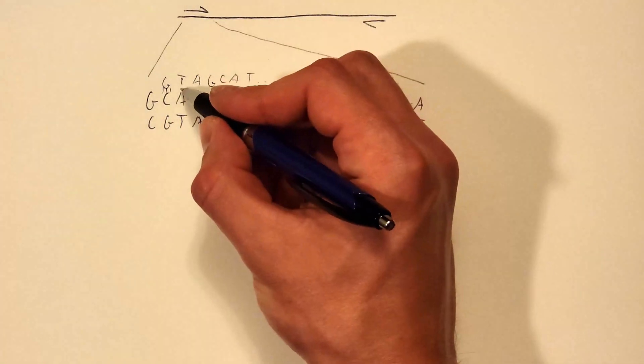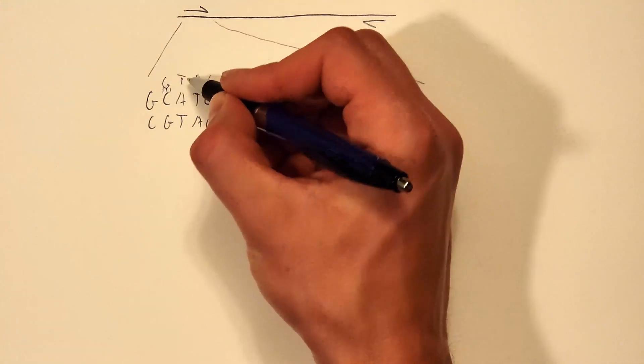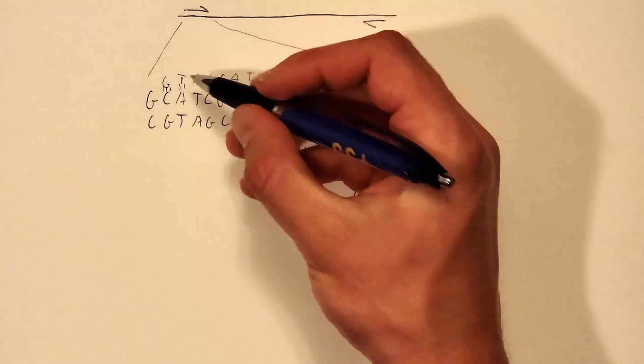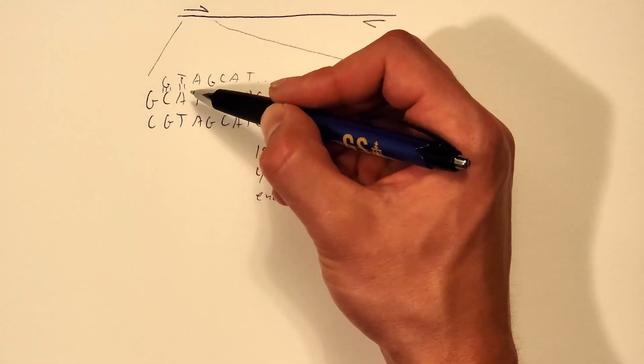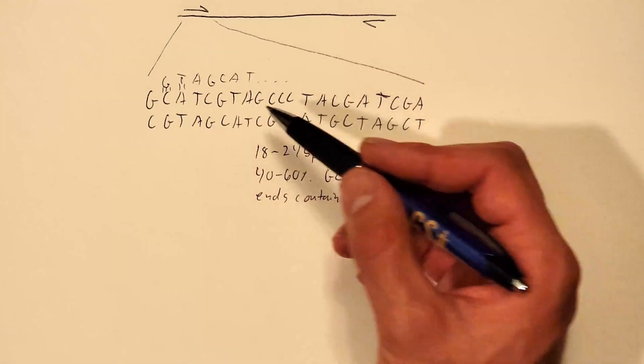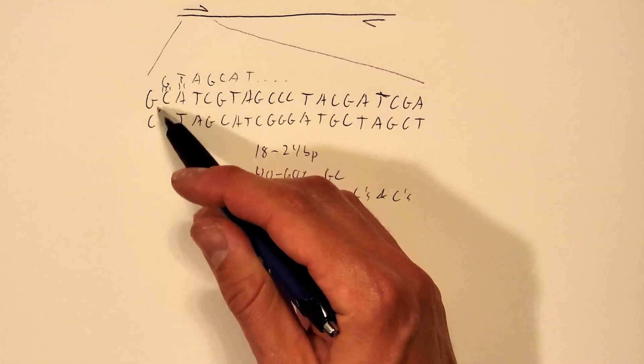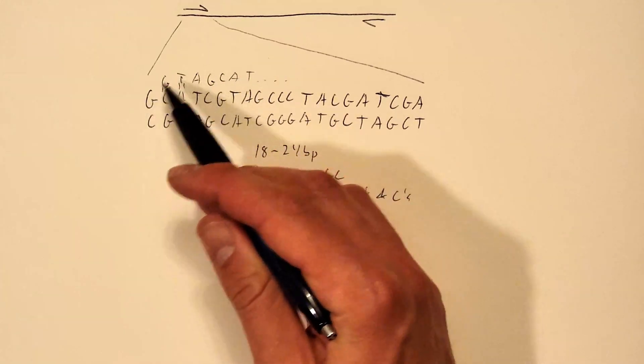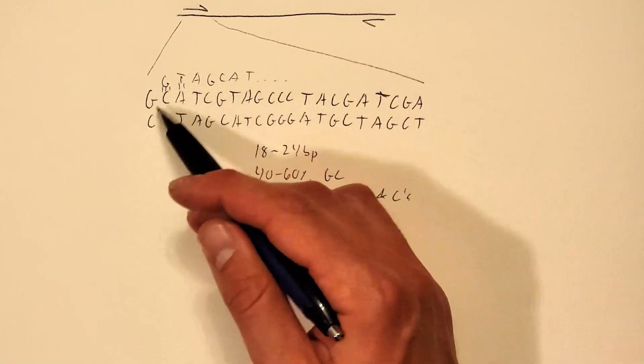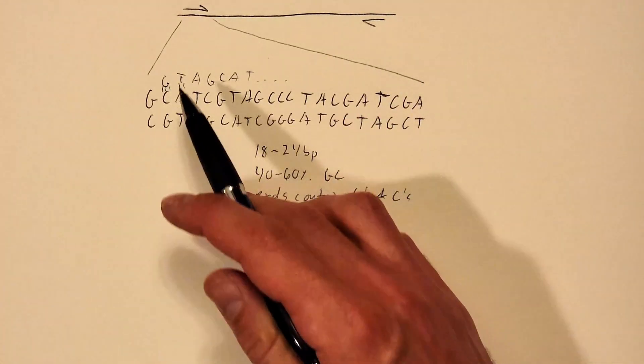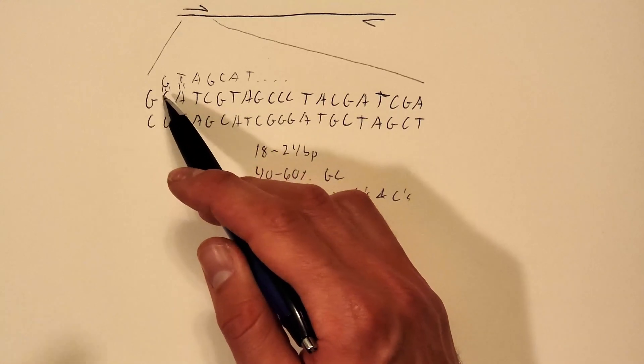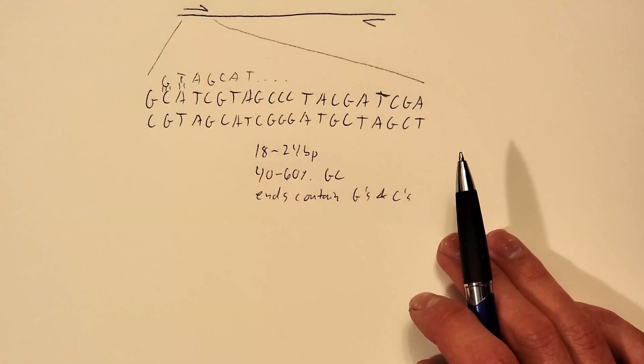So more fundamentally the bonds between G's and C's, the guanine and the cytosine nucleotides have three hydrogen bonds whereas T's and A's their bonds only have two hydrogen bonds. So the bond between T's and A's is weaker and it will come apart more easily whereas the bonds between G's and C's is stronger. And so having G's and C's, two to three G's and C's at the end of your primers is optimal. Having just one in my experience has always been good.